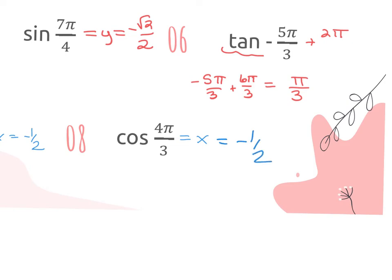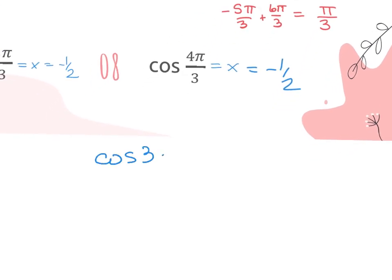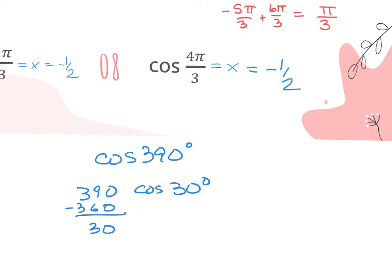Now let's say I give it to you in degrees. In the website tonight, you may get a question like cosine of 390 degrees. 390 is not on my unit circle because it only goes to 360, so I have to subtract 360 and get 30 degrees. I find 30 degrees on the unit circle and look at the x. My 30-degree ordered pair gives me root 3 over 2. So if the web assign gives it in degrees, add and subtract 360; if in radians, add and subtract 2 pi until you get something on the unit circle.